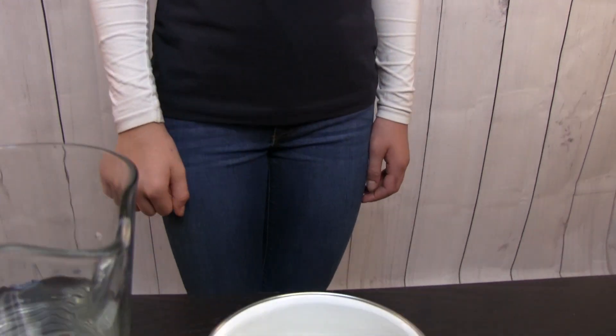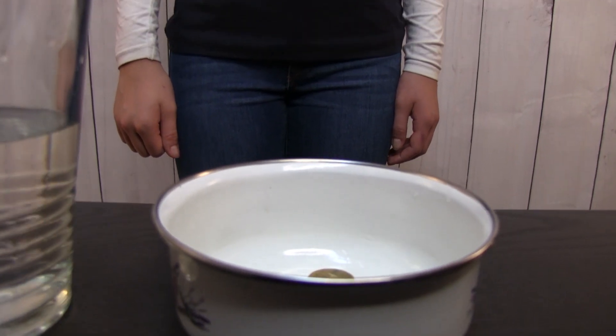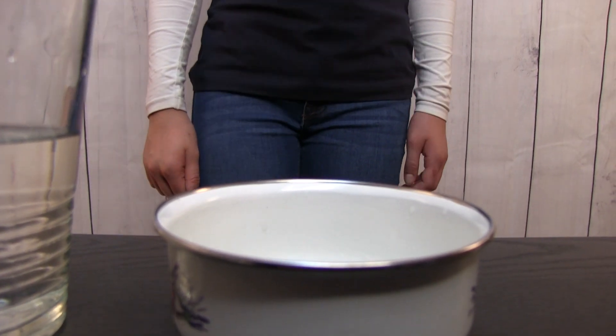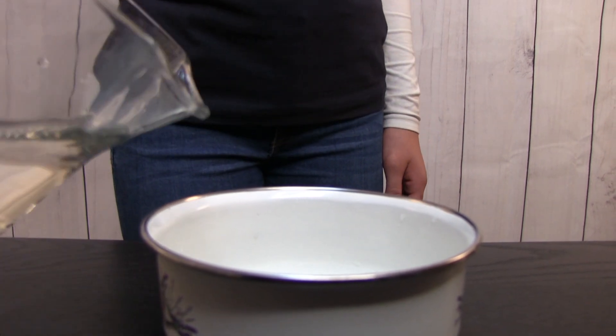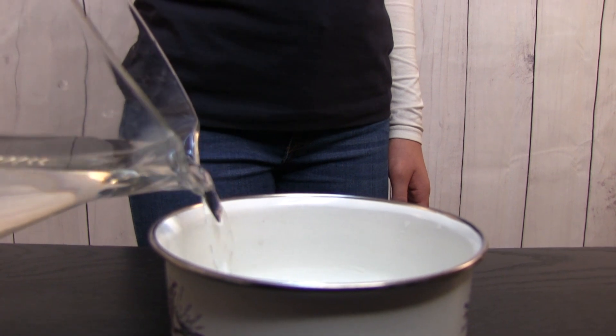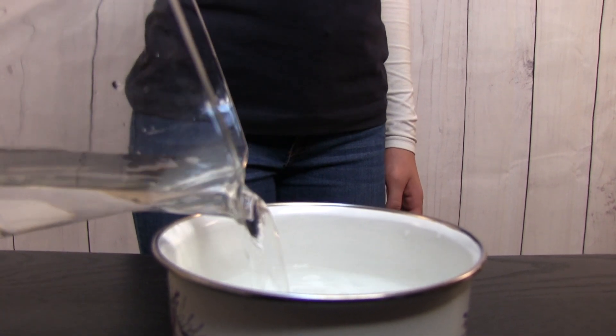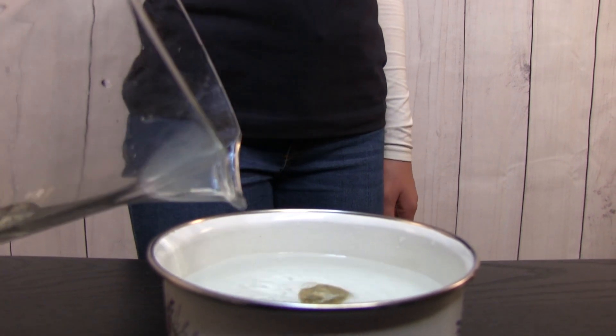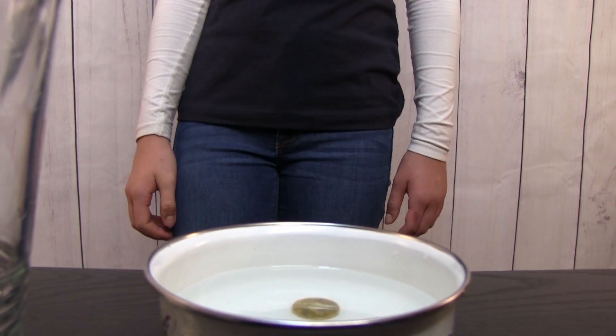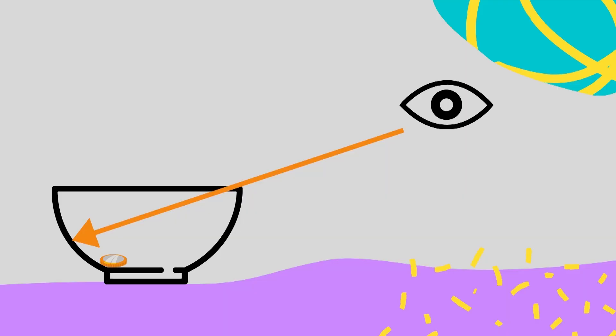This is a coin. I put the coin in the bowl. Now you can't see it. Now I put water in. Now you can see it. Why? Without water, you can't see inside the bowl. The water bends the light, and that is why you can see the coin. This is called refraction.